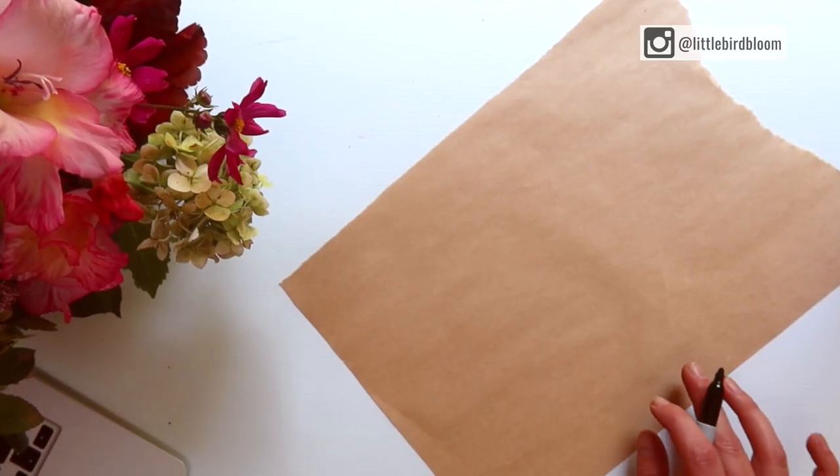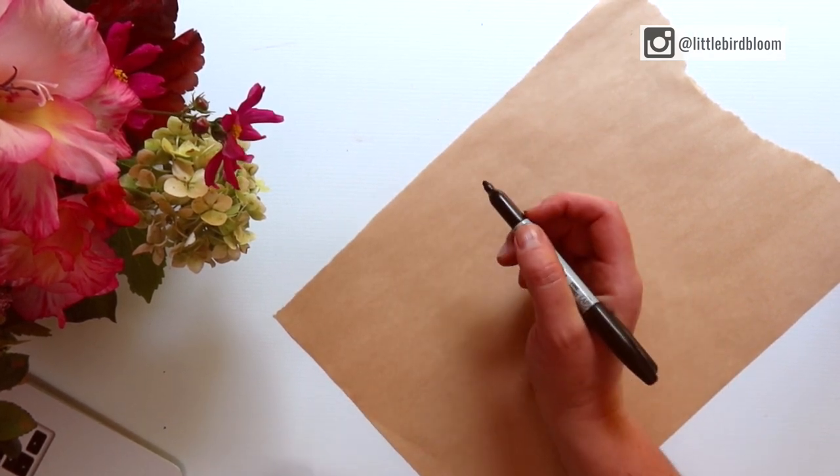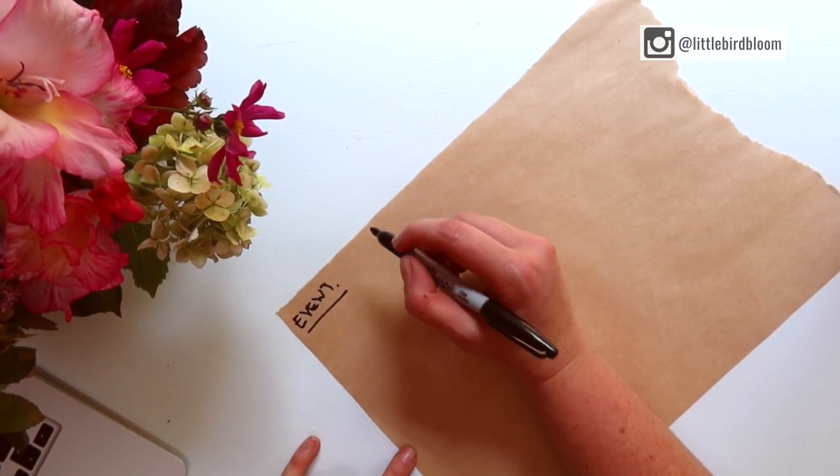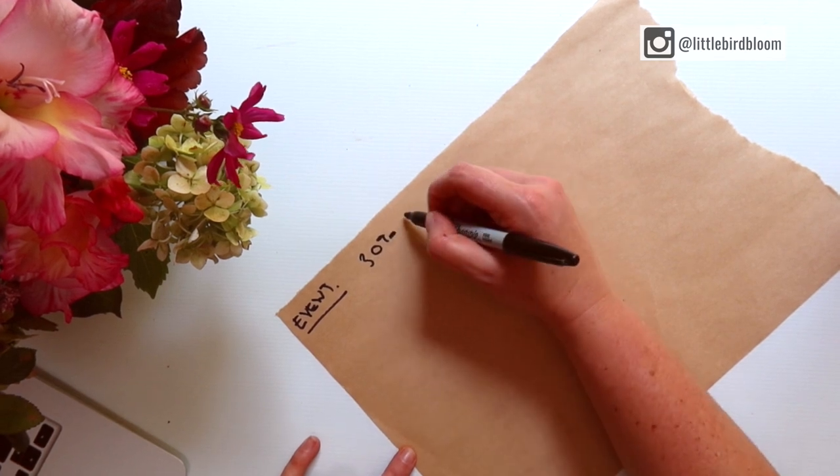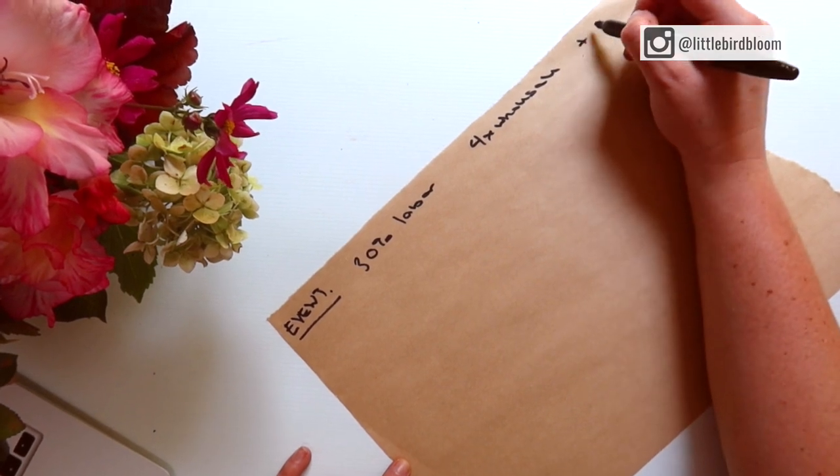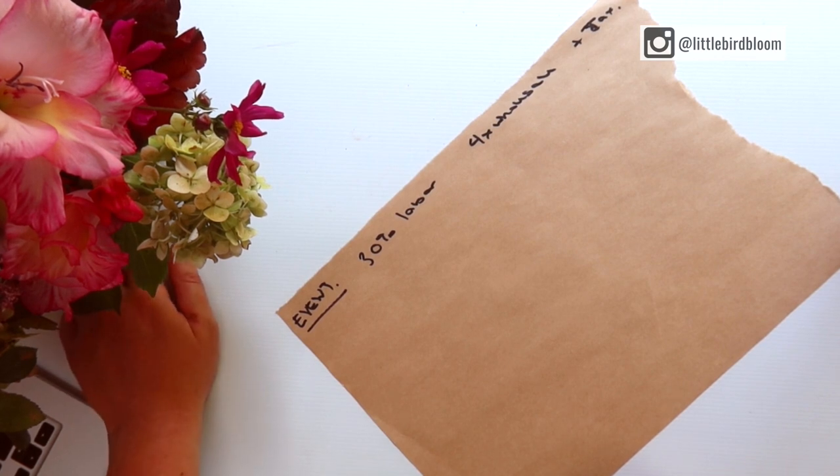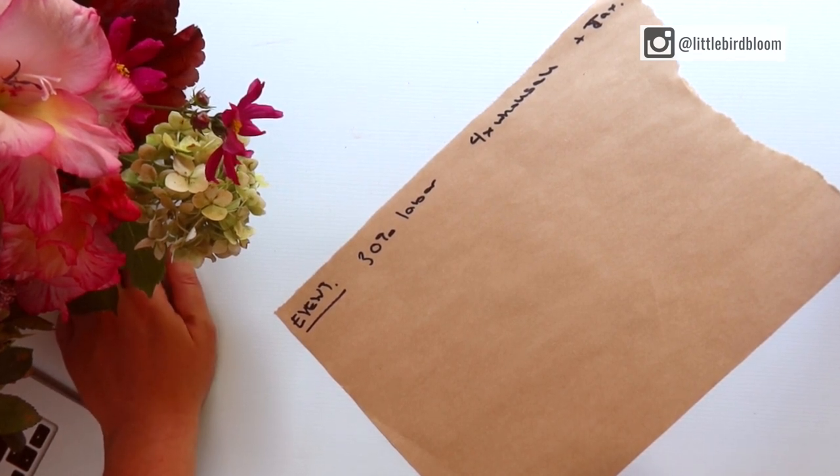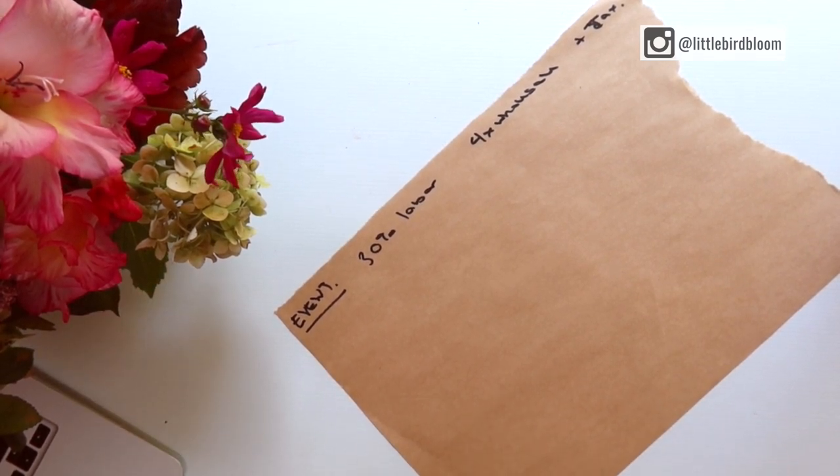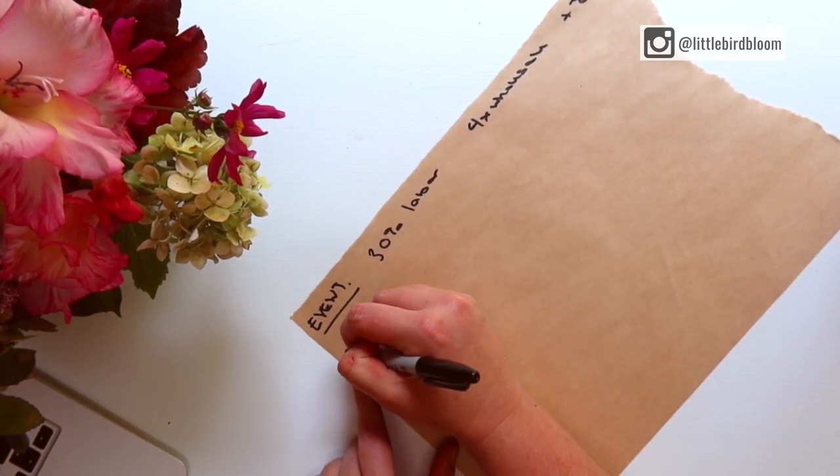So when it comes to sorting out pricing for this style of arrangement, we will still in this instance assume it's going to be for an event, which means we will use the industry standard of 30% labor markup, four times wholesale product plus tax. In this instance, I'm going to assume that the vessel is something that we are actually going to rent out and I'm going to charge a higher fee separate to this costing. So for the sake of simplicity, we're not going to include any cost at this moment for the vessel, our hard goods or our sundries.